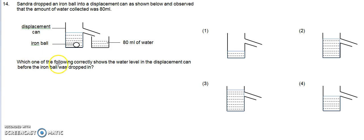So which one of the following correctly shows the water level in the displacement can before the iron ball was dropped in?